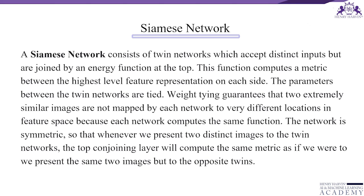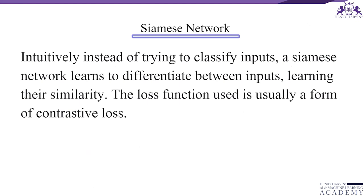The network is symmetric so that whatever two distinct images we present to the twin networks, the top conjoining layer will compute the same metric as if we were to present the same two images but to the opposite twins. So intuitively, instead of trying to classify inputs, a Siamese network learns to differentiate between inputs by learning their similarity. The last function is usually a form of contrastive loss.